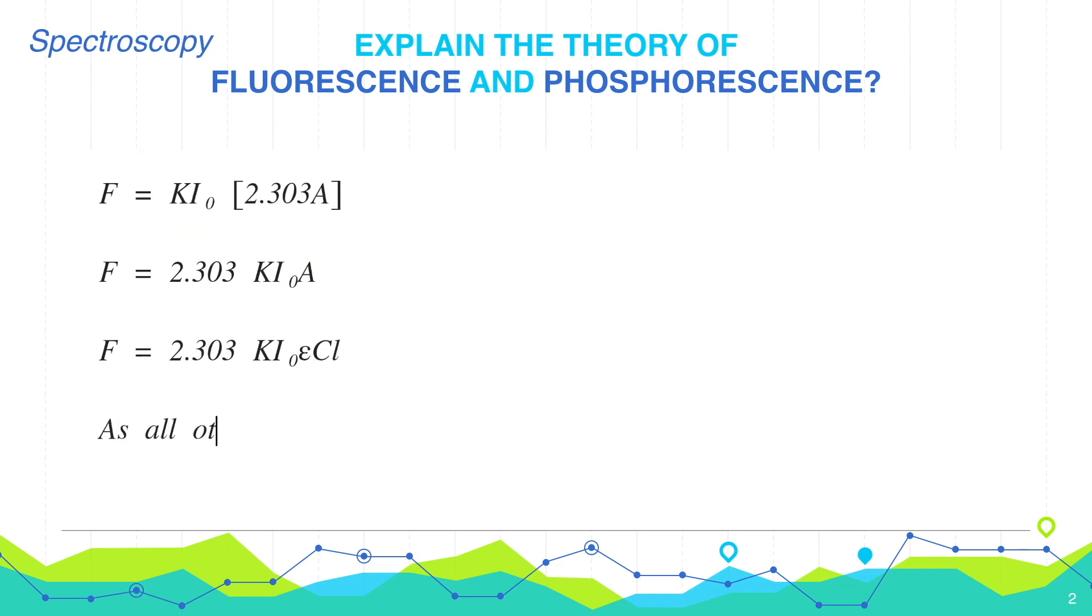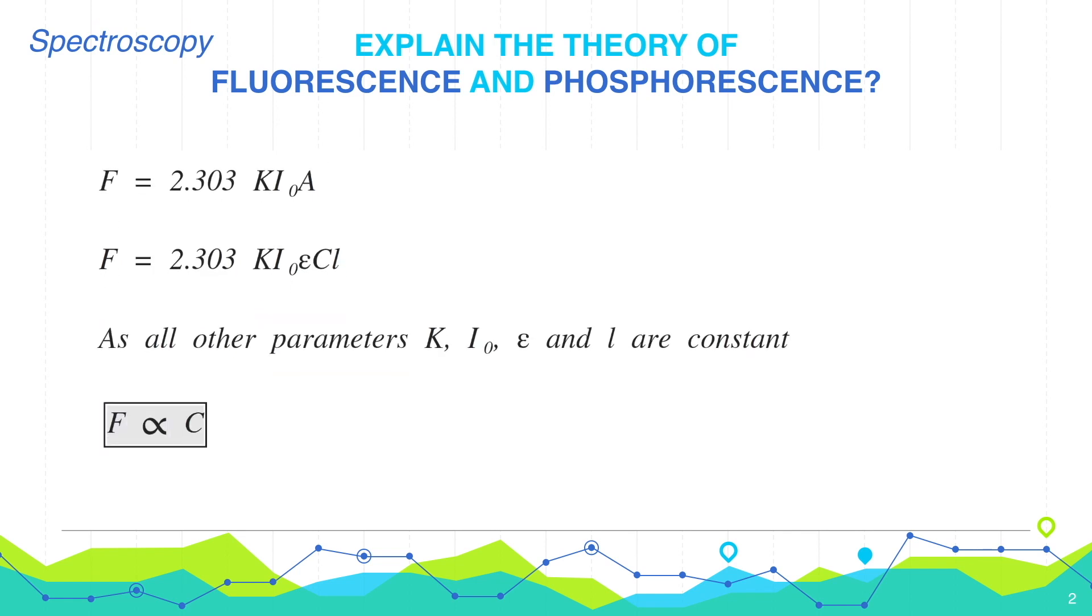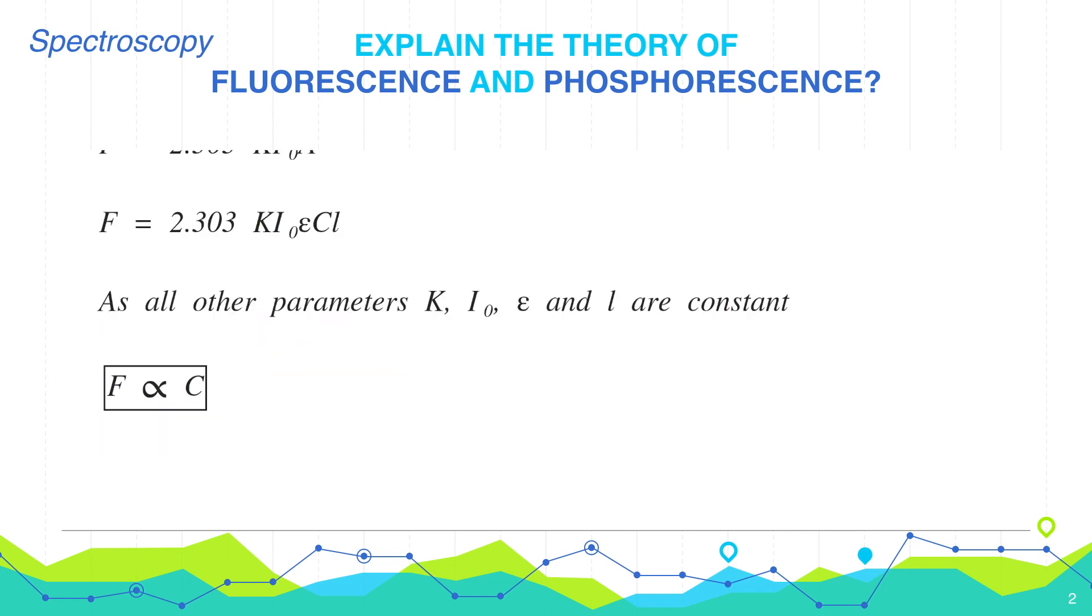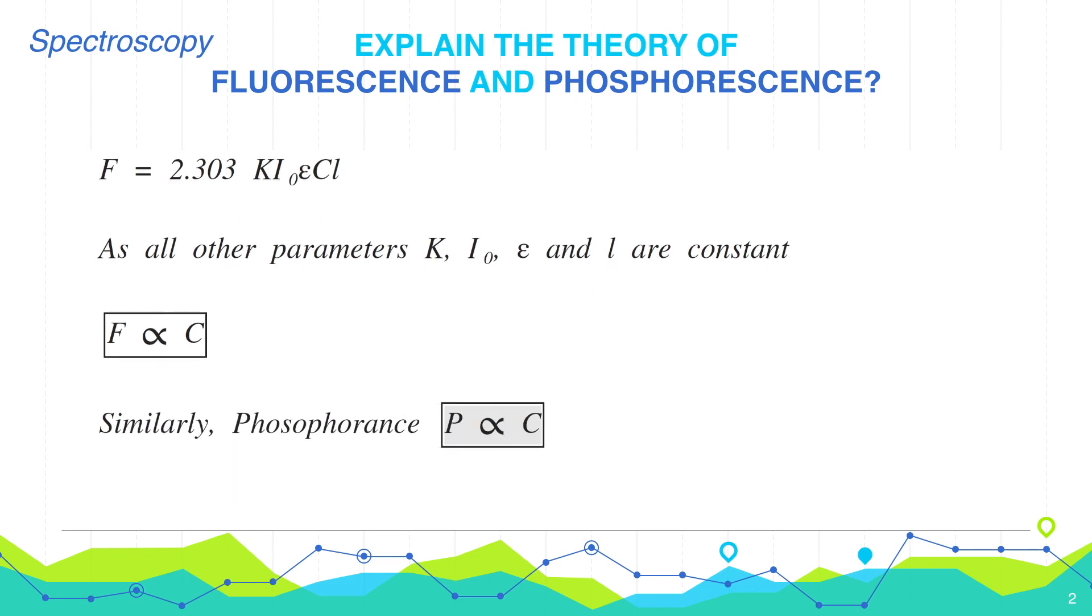As all other parameters like K, I0, epsilon, and L are constant, therefore we can say F is proportional to concentration C. Similarly, we can also derive the relation phosphorescence is proportional to concentration C.